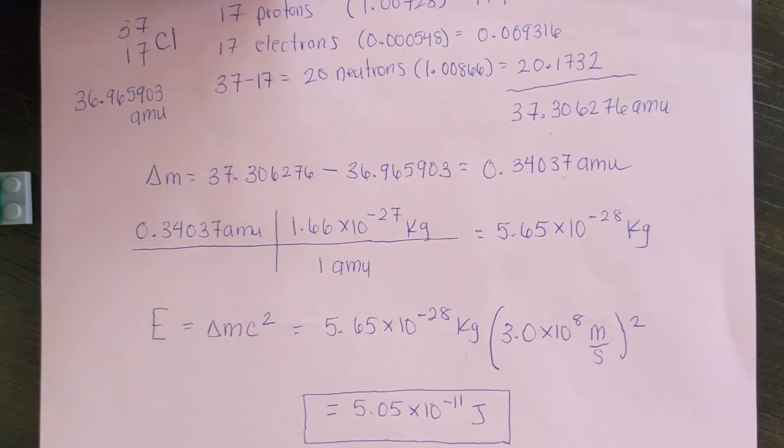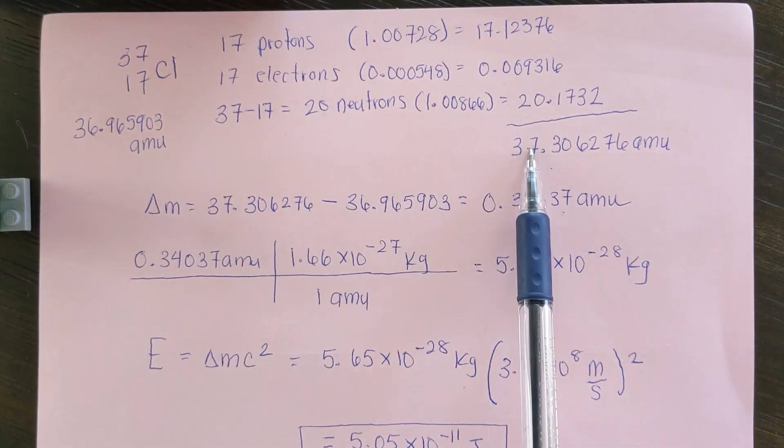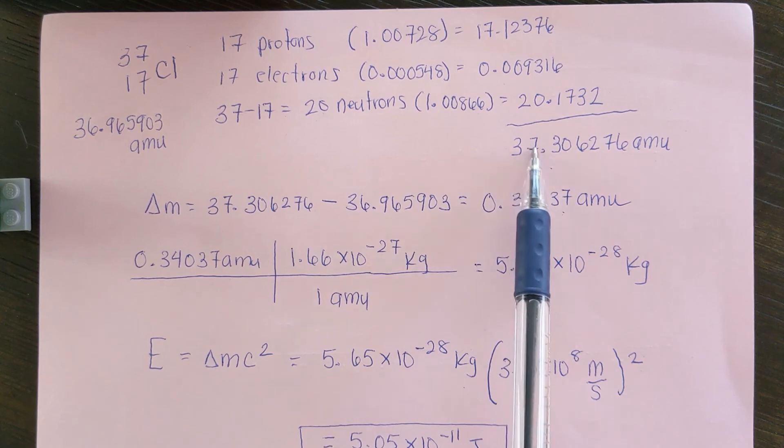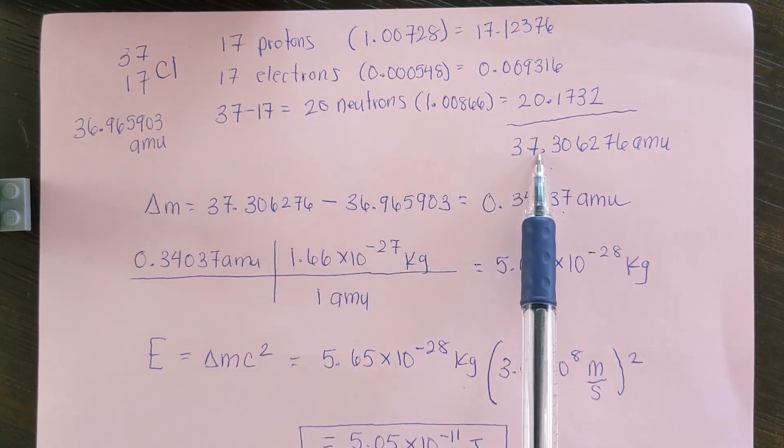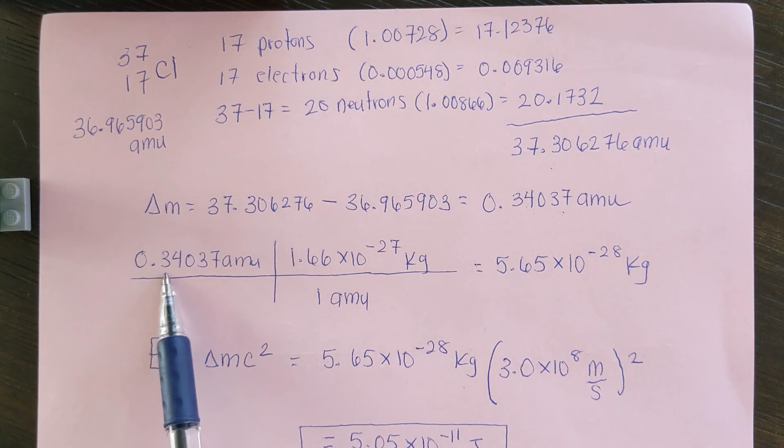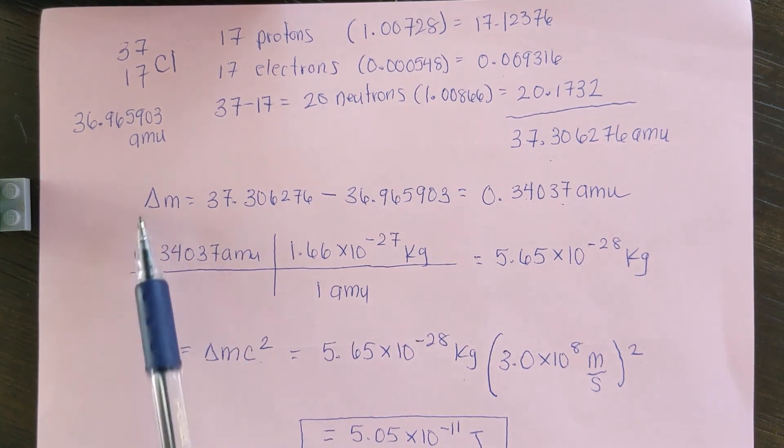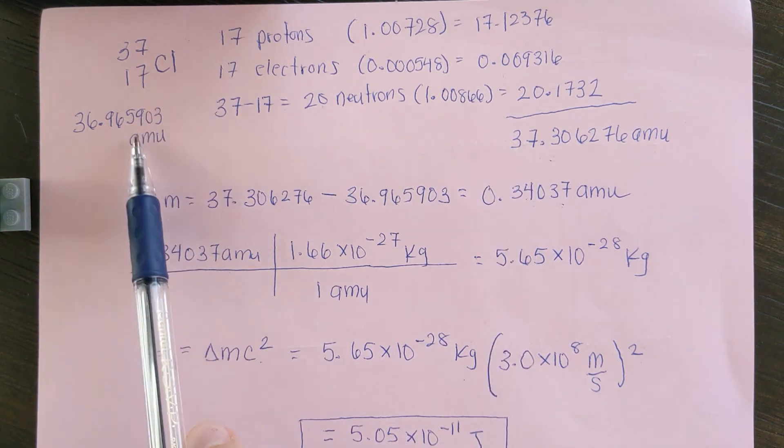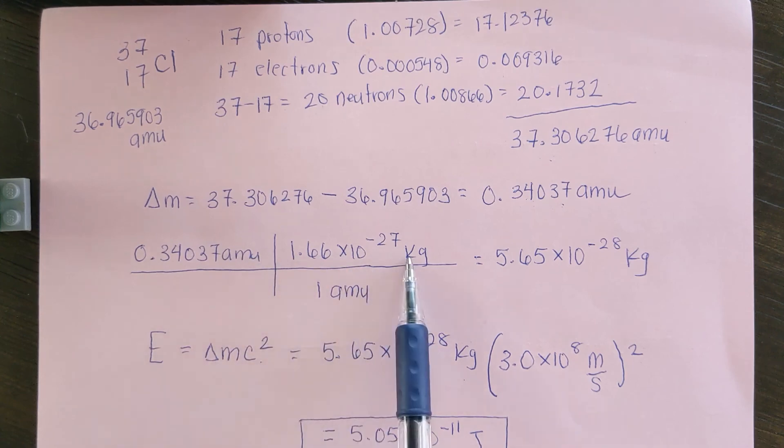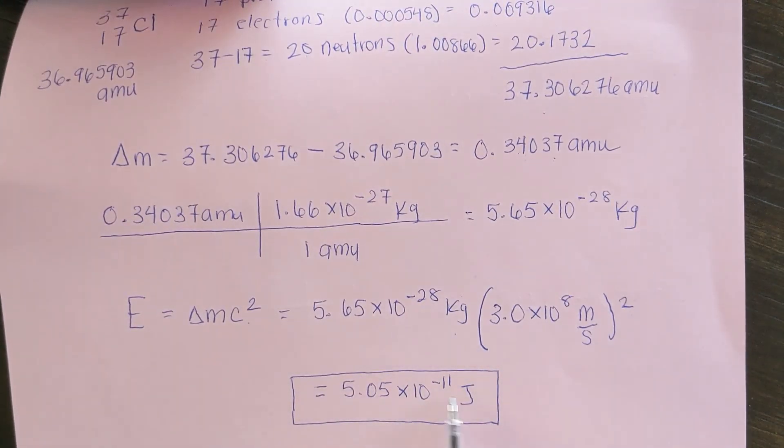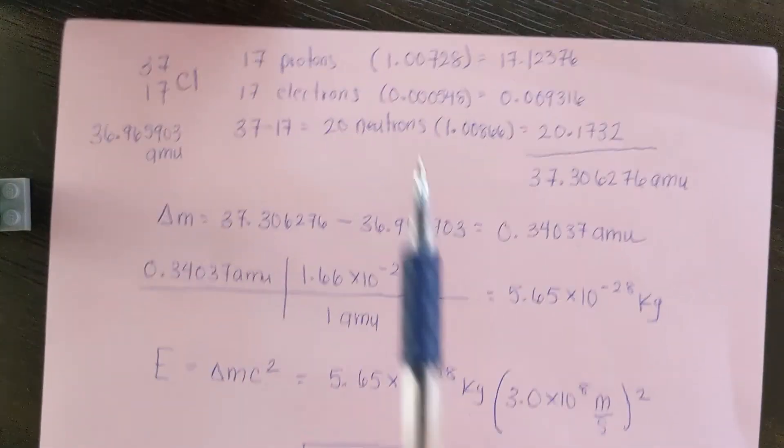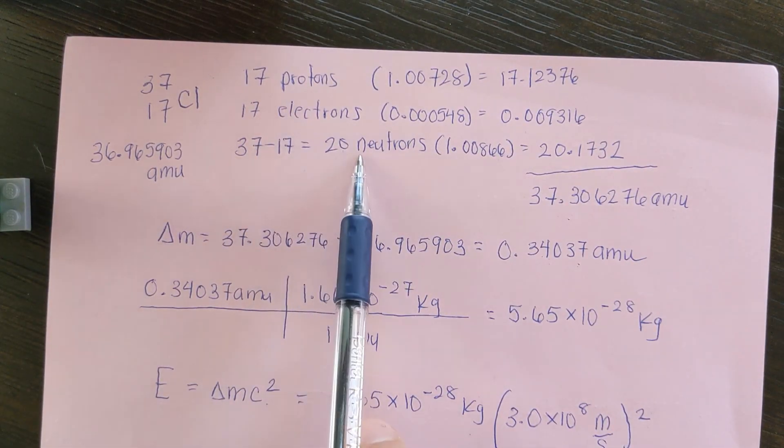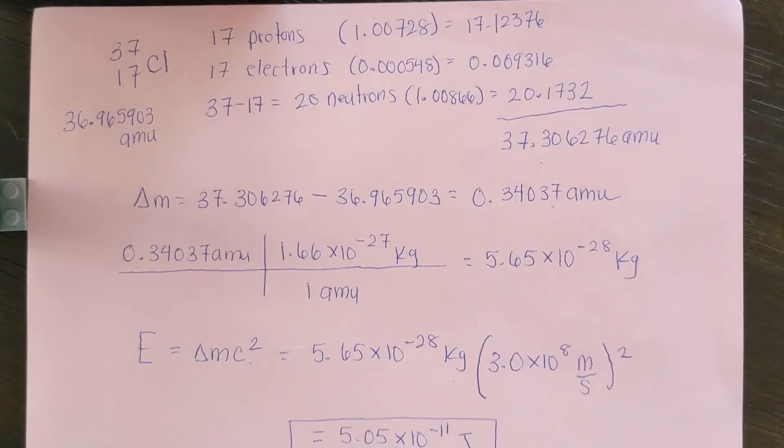So again, this is the difference in mass of our particles. If we add them all up separately, the difference in mass between these is what is converted into energy. So we use E equals mc squared, where our mass is the difference in mass between all the particles individually and what they are bound together. Convert that to kilograms, so that when we put it in E equals mc squared, we can get our kilograms meters squared per second squared to get our energy in joules. So this is how much energy is required to bind 17 protons together with 20 neutrons in the nucleus of the atom.